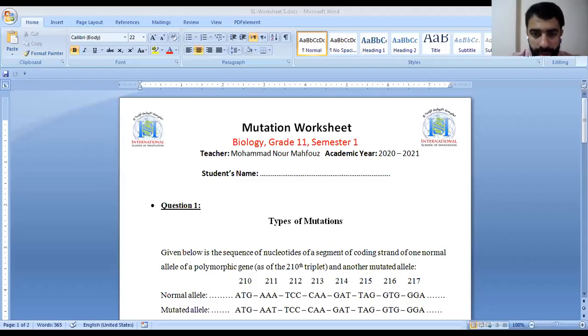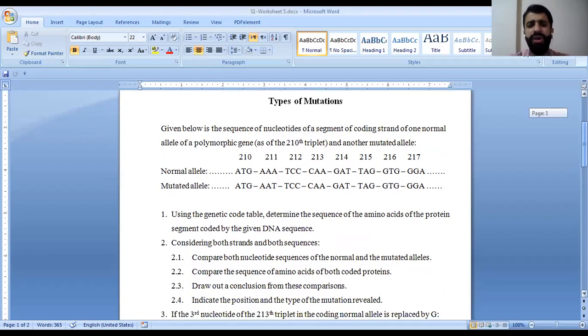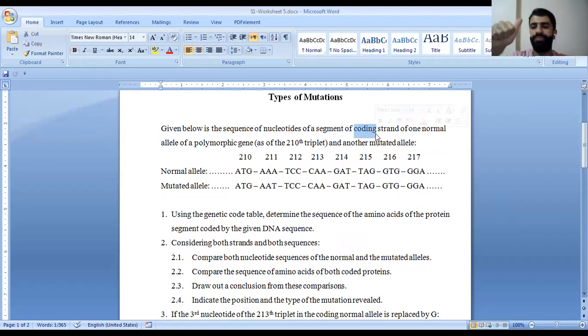So here we start with the mutation worksheet number one, types of mutation. Given below is the sequence of nucleotides of a segment of coding strand. Pay attention here to this word, coding strand. So it's non-transcribed, it's the non-template, it's the coding. They told you that this is the coding strand.